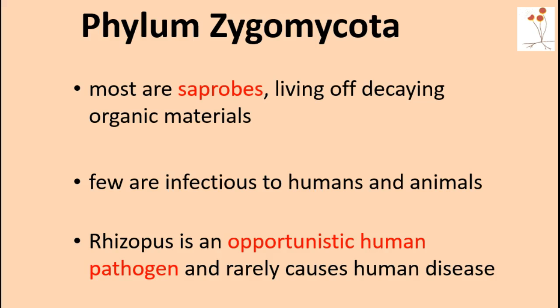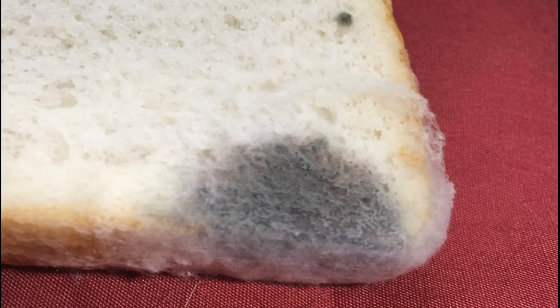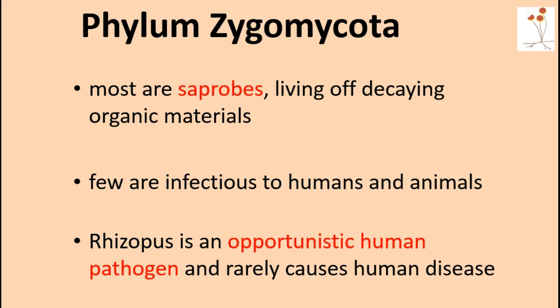Let's begin by giving some terms. Most of the members that fall into the phylum Zygomycota are going to be called saprobes — you might also hear the term saprophytic. That means that they will live off decaying organic matter. So as you can see here, this bread mold is considered a dead organic matter, and these molds are going to grow on it and extract its nutrients.